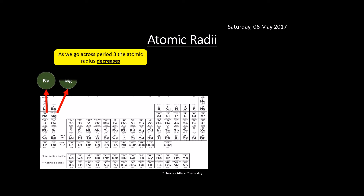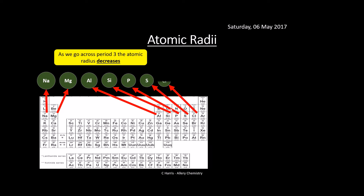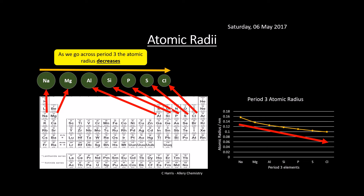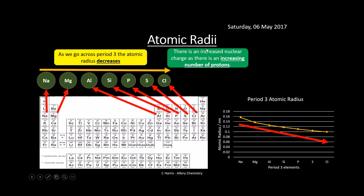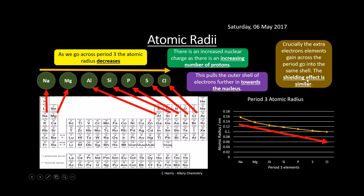Let's look at atomic radii. As we go across period three, the radius decreases — it gets marginally smaller. The atomic radius is measured in nanometers and you can see it generally decreases. This is because there is an increased nuclear charge as we go across — we've got more protons in the nucleus, which pulls in the electrons in the shell. Crucially, the shielding effect is very similar across this period because we're not entering any new shells. So the increased nuclear charge, the increased number of protons, does have an effect — it just pulls those outer electrons in a little bit more.